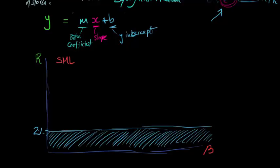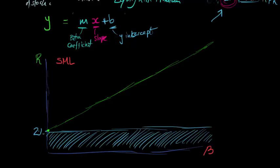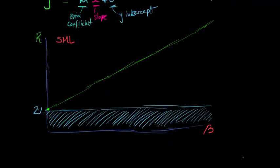The line itself is going to start at the Y intercept of the risk free rate, and it's going to increase by a slope of the equity risk premium multiplied by its coefficient, which is beta.